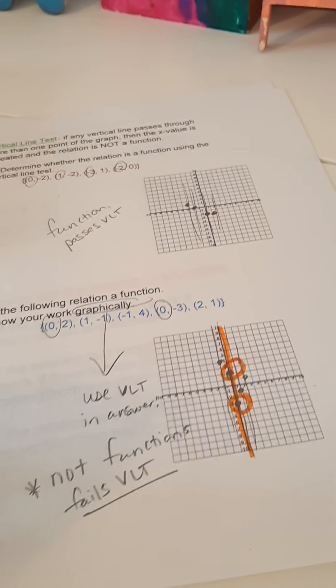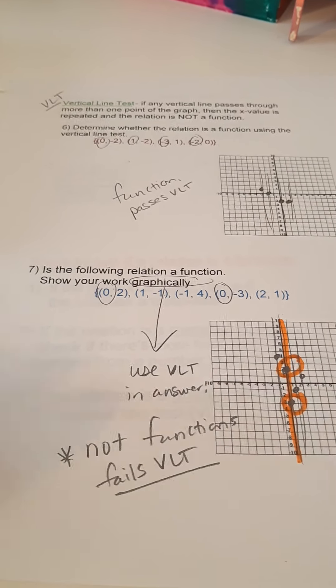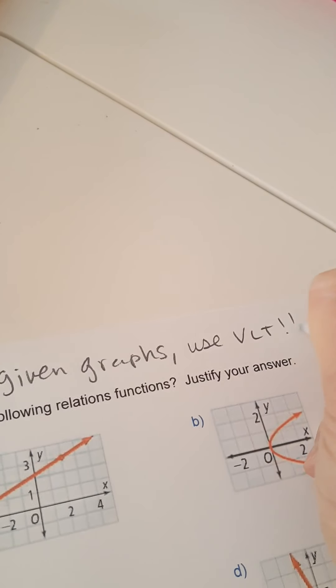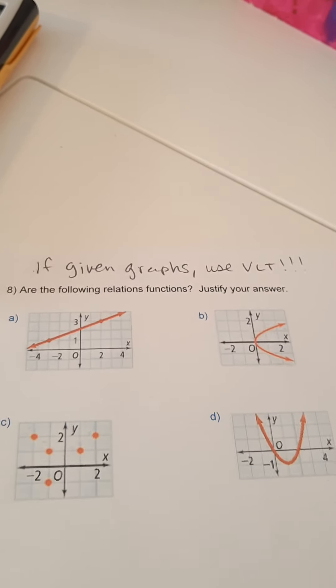Okay. So, we're at the home stretch here. Last page that I have here are the following relations functions. Justify your answer. So, write yourself a note. If you're given graphs, use the vertical line test. Okay. If you're given graphs, use the VLT.